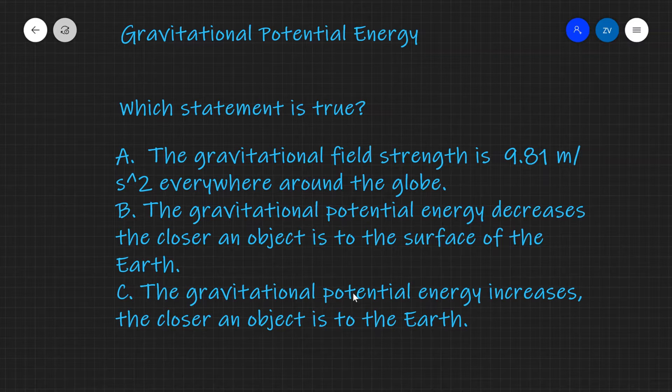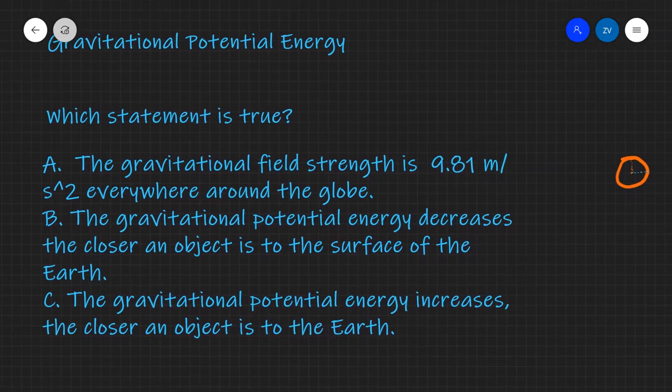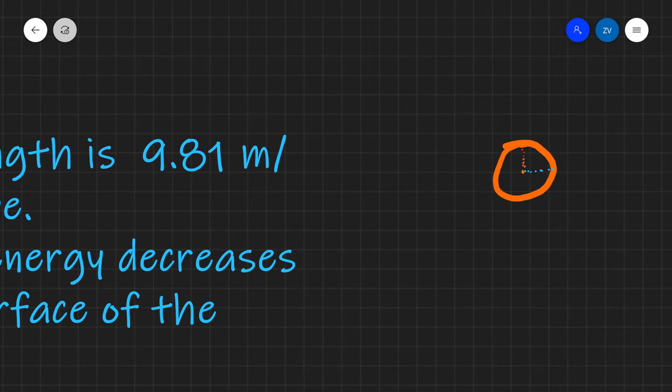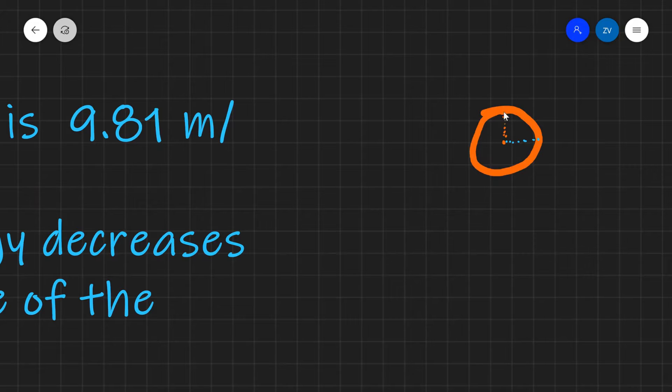Now why are A and C wrong? First of all, the gravitational field strength is 9.81 meters per second squared, but only on average. Because the Earth is a spinning sphere, it's actually a little bit flatter towards the top, so that means if you're sitting on the North Pole, you're actually a little bit closer to the center of gravity of the Earth compared to if you were sat on the equator.